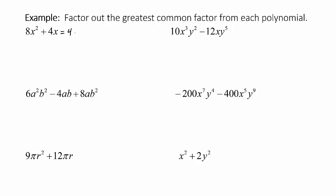Now look at the variables. In the first term I have x squared, and in the second term I have x. So x is common to both of them. In the first one I have an exponent of 2, and in the second one I have 1.